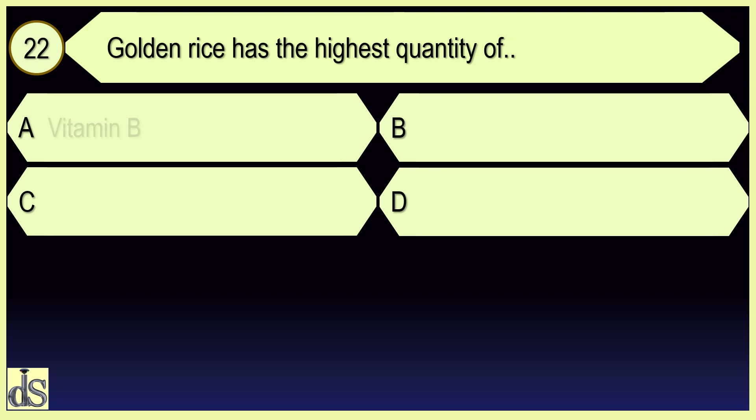Golden rice has the highest quantity of vitamin A.